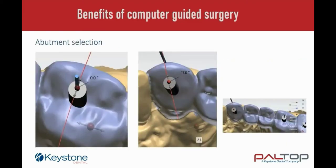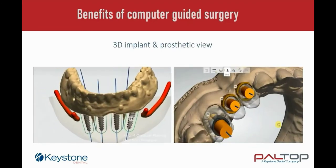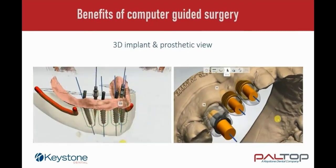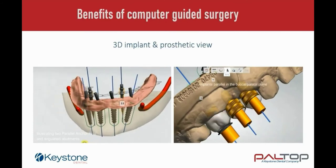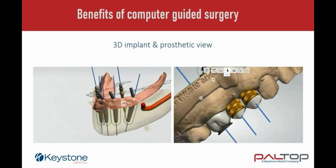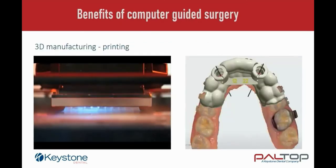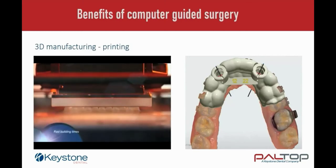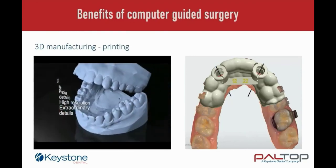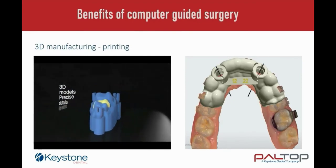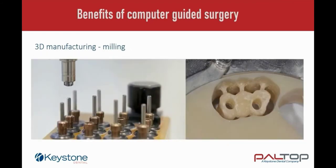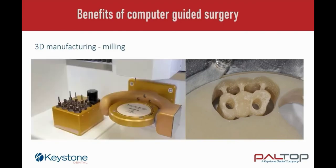Abutment selection for both cuff height and angulation is simple when using computer-guided surgery. 3D anatomical and prosthetic views offer us clear visualization of bone structure, implants, abutments, soft tissue, tooth structure and virtual teeth. We can benefit from the use of 3D manufacturing, such as 3D printing, being able to print our surgical guides, models and temporary crowns. 3D milling may also be used. It is important to note that digital manufacturing files are always available for repeat production.